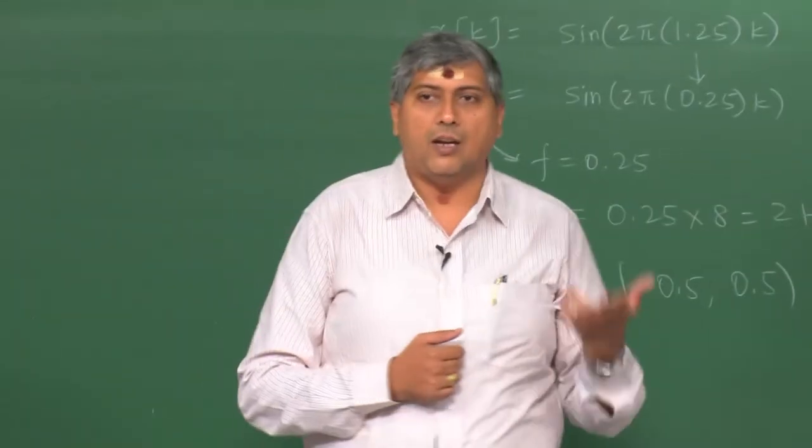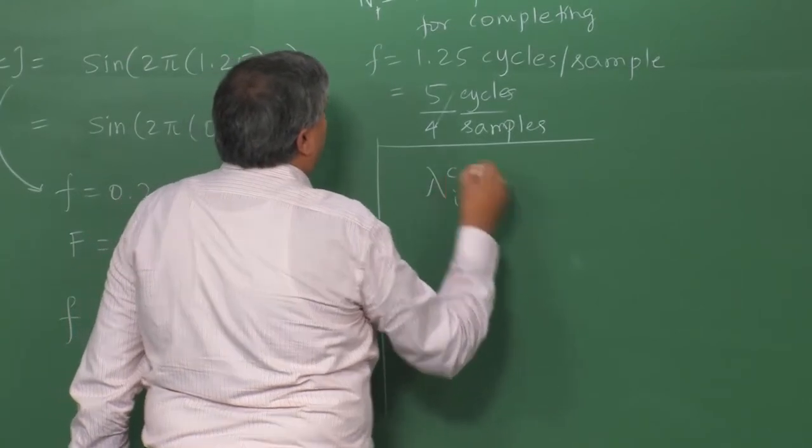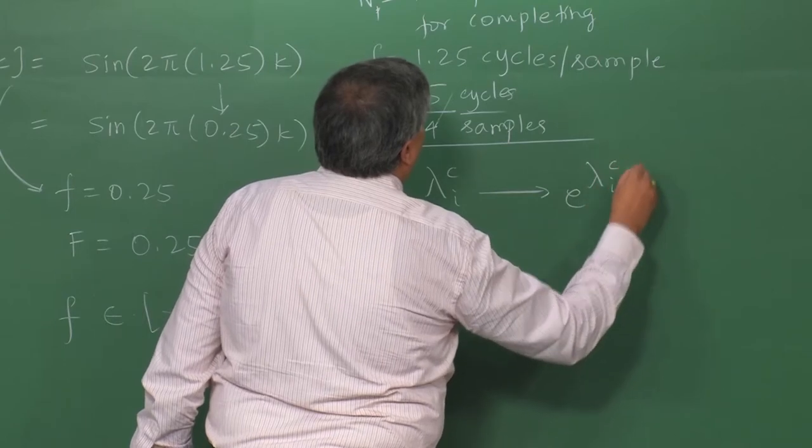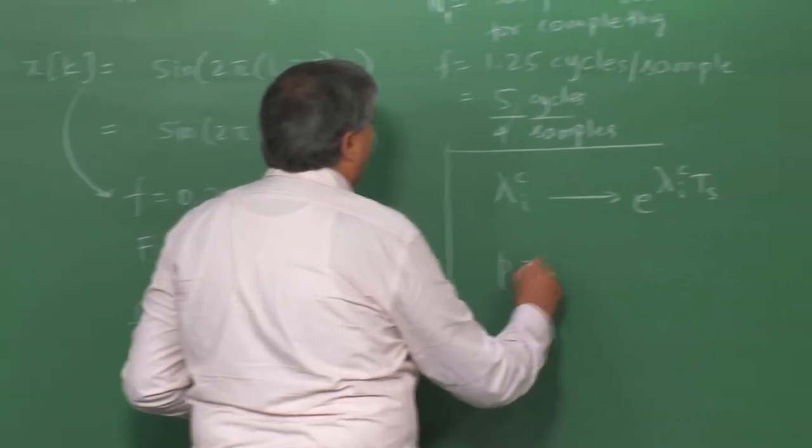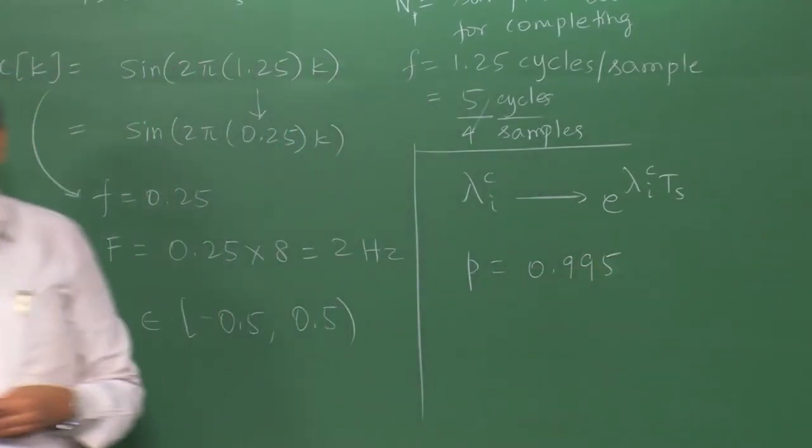When you sample very fast, two things can occur. First, you bring in a lot of noise. Second, from the eigenvalue mapping theorem, lambda of the continuous time system maps to e^(λ_i T_s). If F_s is very high, T_s is very small, and e^(λ_i T_s) is pushed toward one, meaning you are pushing poles close to the unit circle — which is not good in system identification.